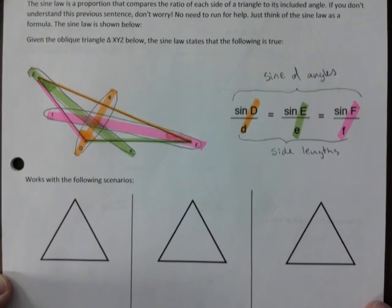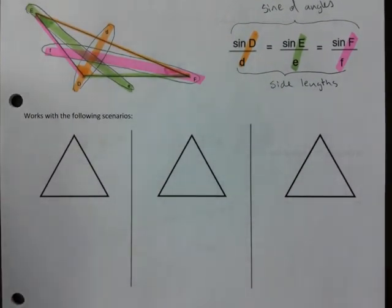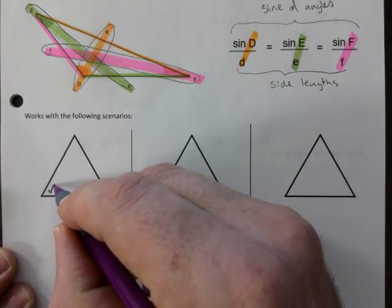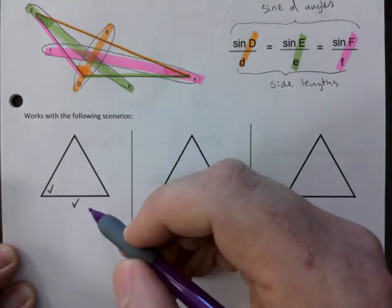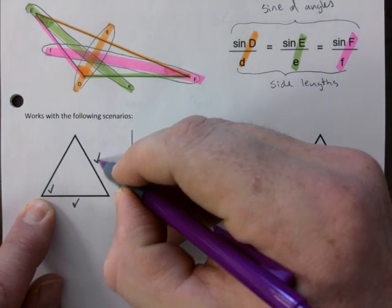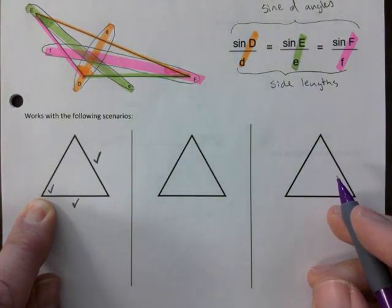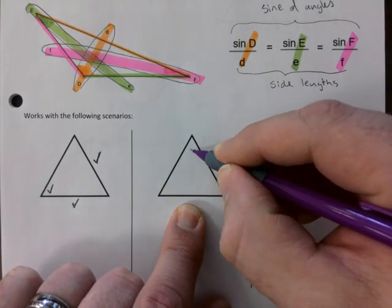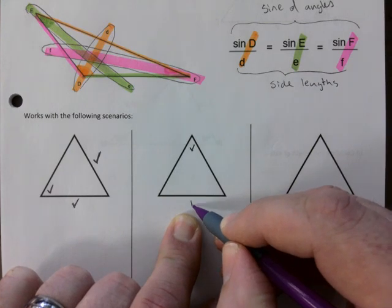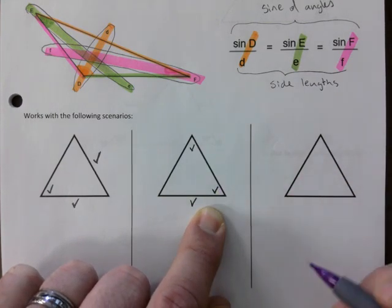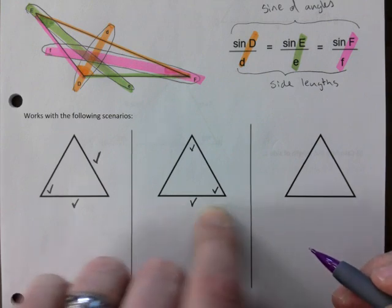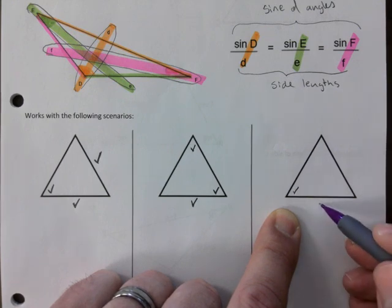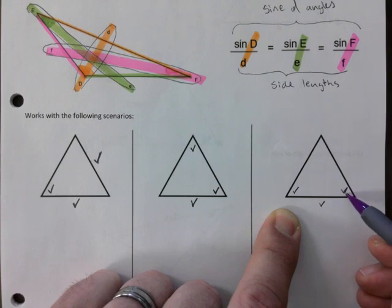Sine law works in the following scenarios. Three scenarios where it works guaranteed. You could have an angle there. You know what that is. A side here. And then another side there. That would work. The other scenario is, I'm just going to give you an angle there. A side length here. And one other angle. And this one is hidden. Watch.